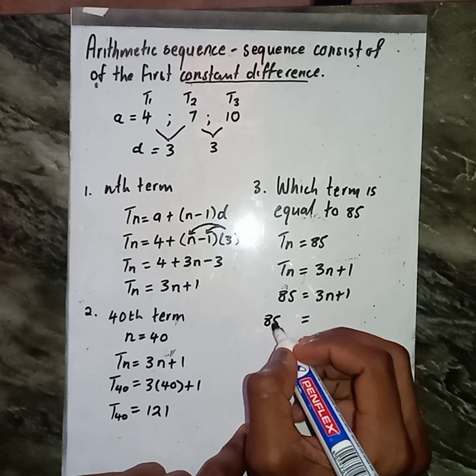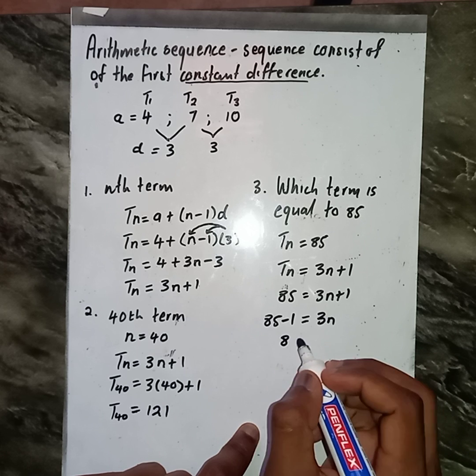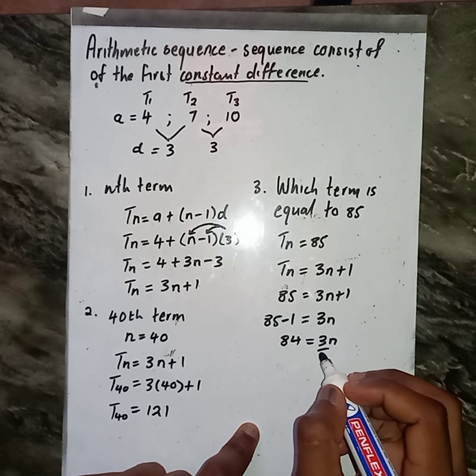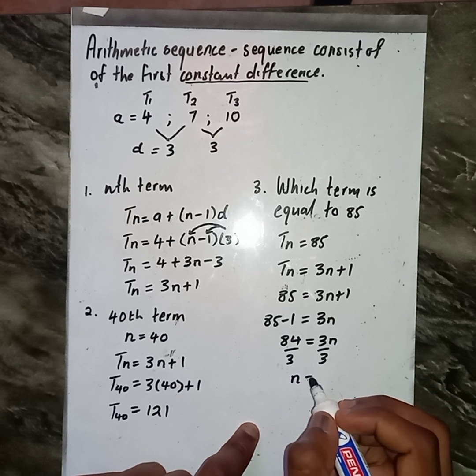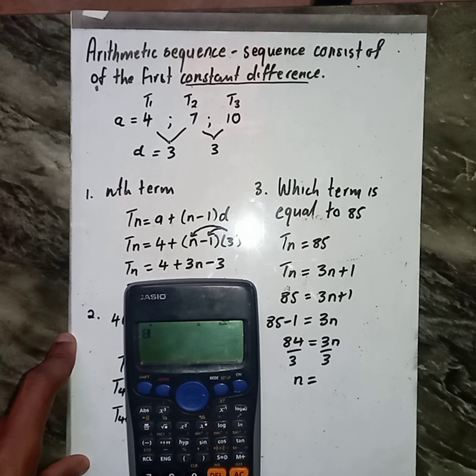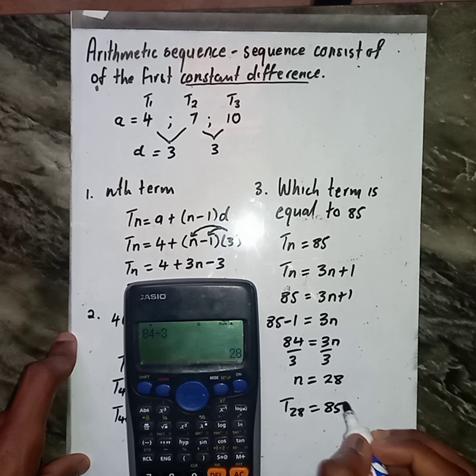It's going to be 85 minus 1. Then we get 84 this side, 3n. Let us divide everything by 3. Then finally, our n is going to be 84 divided by 3, we get 28. What does this mean? It means term number 28 is going to be 85.